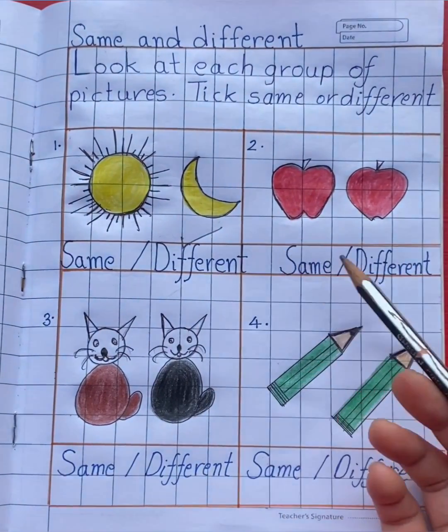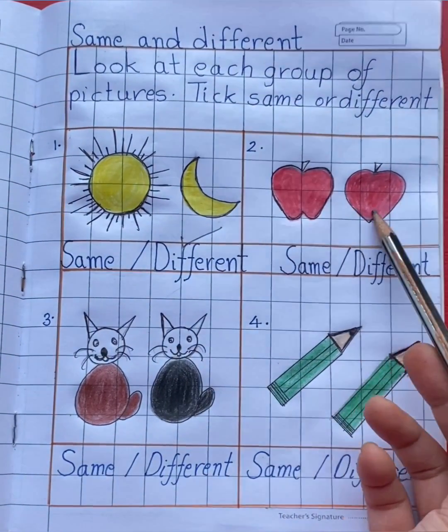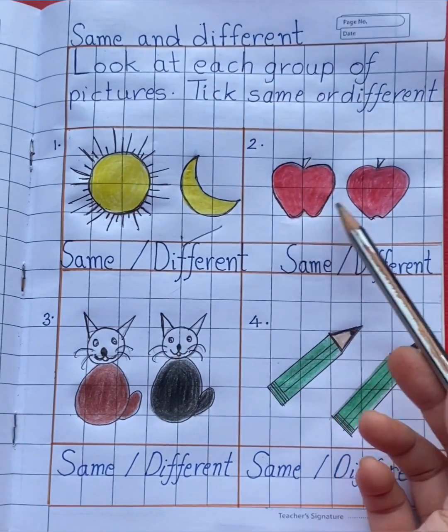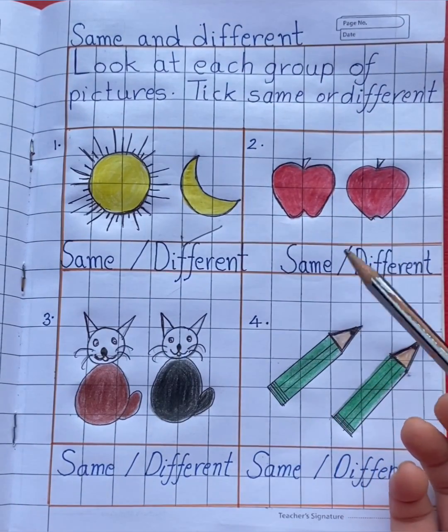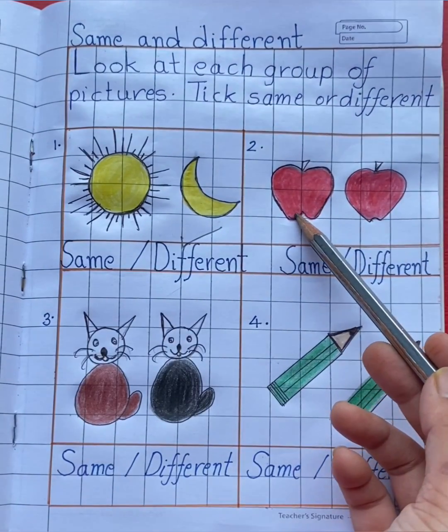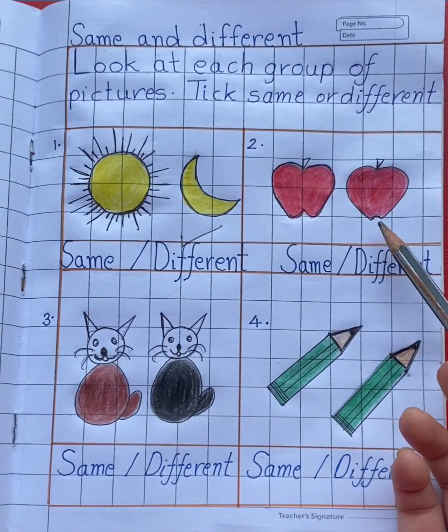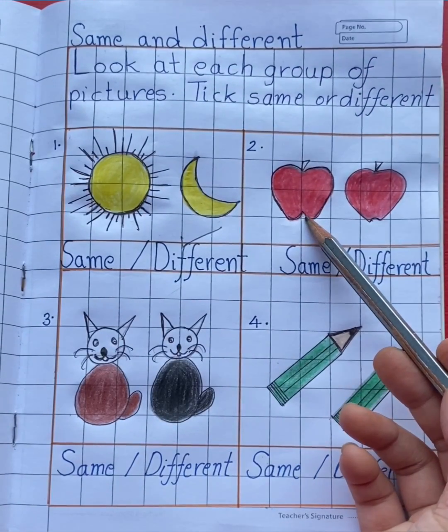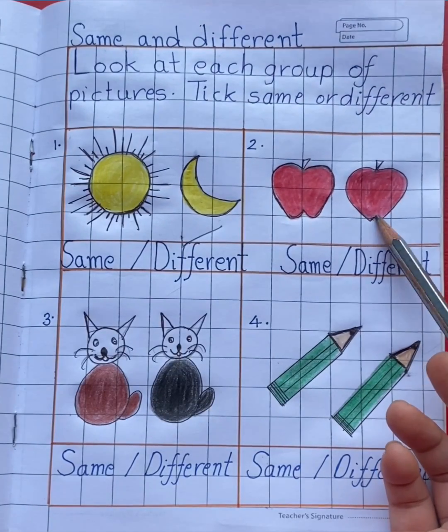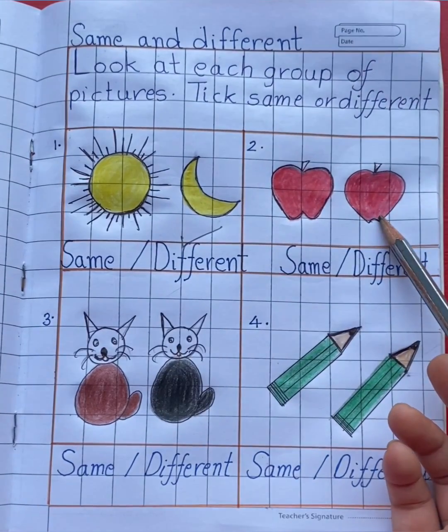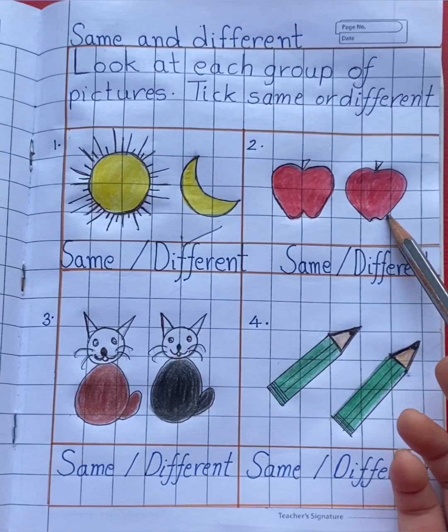In the next group, you can see two apples. Are they same or different? Yes, same. The color of the apples are same. First apple is red in color, second apple is also red in color. So they are same, so tick same.